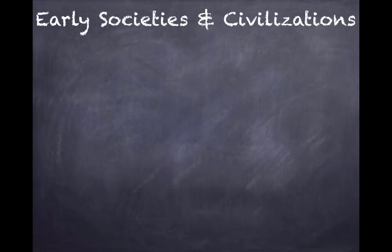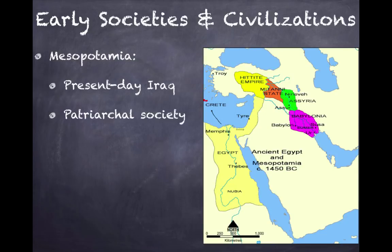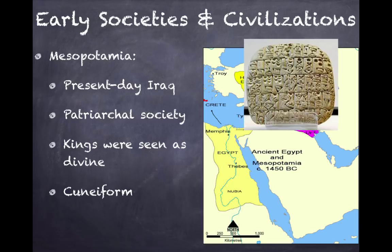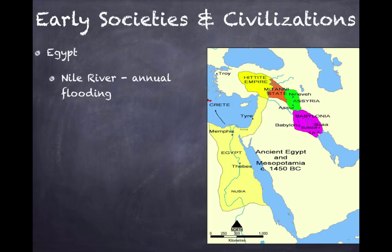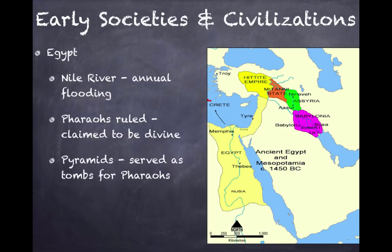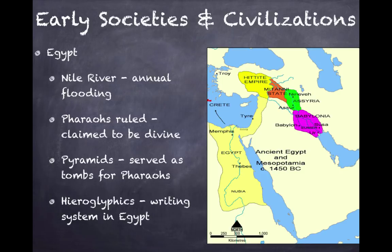In Mesopotamia, located in modern-day Iraq, it was a patriarchal society and kings were seen as divine — a theme you'll see repeatedly. Cuneiform was the writing system developed there, and the Codes of Ur-Nammu and Hammurabi helped regulate life in the region. In Egypt, located on the Nile River Valley, annual flooding was very positive for farming. Pharaohs ruled and also claimed to be divine. Pyramids were built as tombs for pharaohs, and hieroglyphics was their writing system, which we can interpret due to the Rosetta Stone.